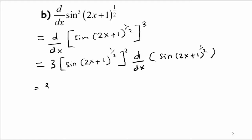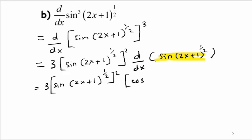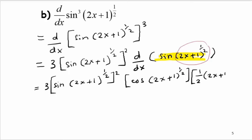This equals 3·[sin(2x + 1)^(1/2)]² multiplied by the derivative of sin(2x + 1)^(1/2). Differentiating sin(2x + 1)^(1/2) gives cos(2x + 1)^(1/2), and then we differentiate the angle (2x + 1)^(1/2), which gives (1/2)·(2x + 1)^(−1/2) multiplied by 2. The 2s cancel.